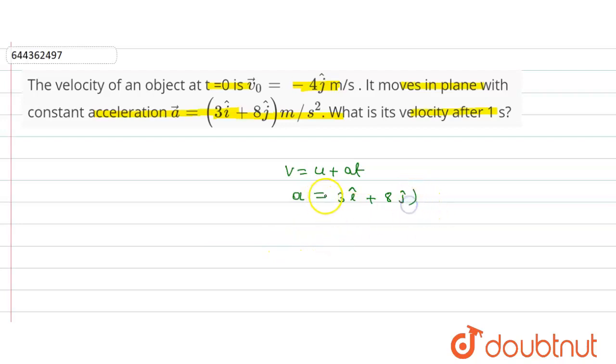So v is equal to: u value is given minus 4j cap plus at, means 3i cap plus 8j cap. A into time is given one second.